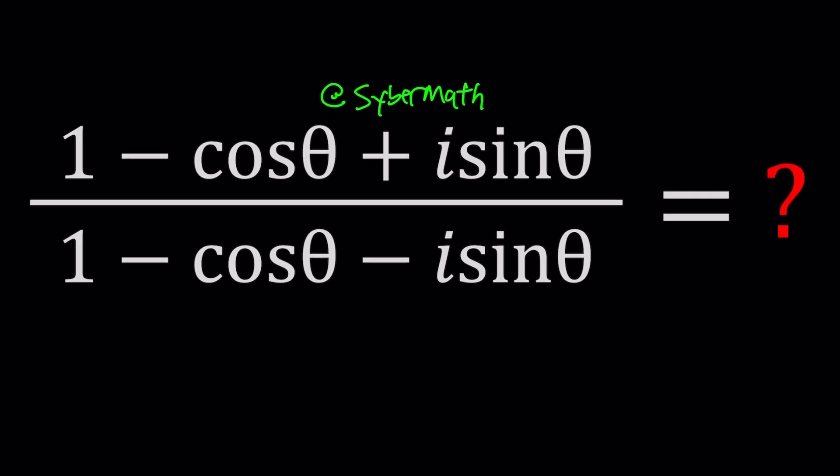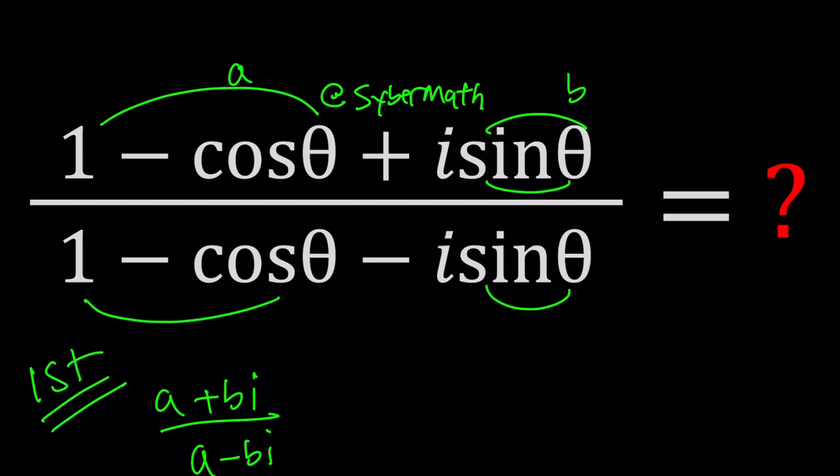How do you simplify something like this? Well, even though this may look very complicated, it is actually an easy expression. Why? Because 1 minus cosine theta is repeated, sine theta is repeated, the only difference is minus sine. The minus sign makes a difference. But if you call this A and if you call this B, then you would be getting something like A plus BI divided by A minus BI, which I believe should be fairly easy to solve.